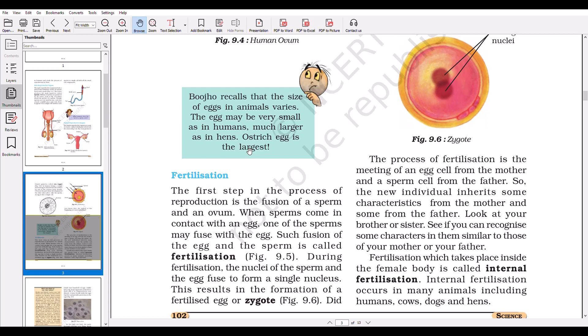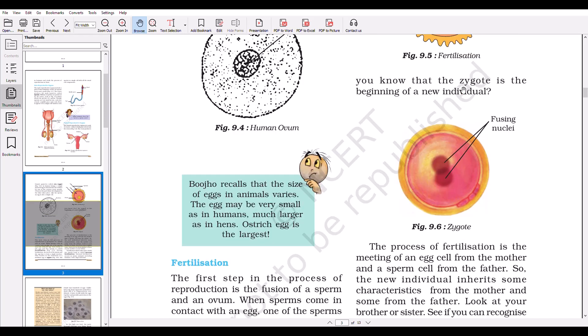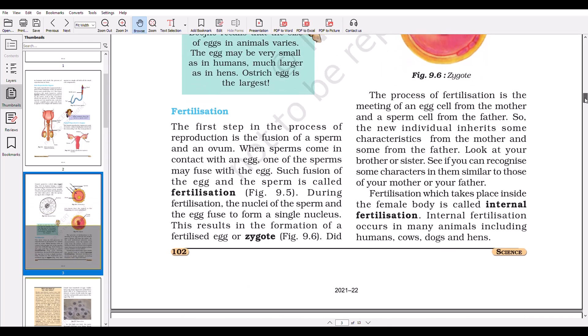Now, what is fertilization? It is the first step in the process of reproduction. The fusion of a sperm and an ovum: when sperms come in contact with an egg, one of the sperms may fuse with the egg. Such fusion of the egg and the sperm is called fertilization. During fertilization, the nuclei of the sperm and egg fuse to form a single nucleus. This results in the formation of a fertilized egg or zygote.